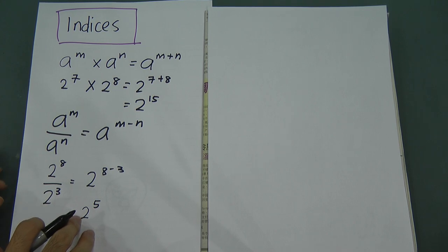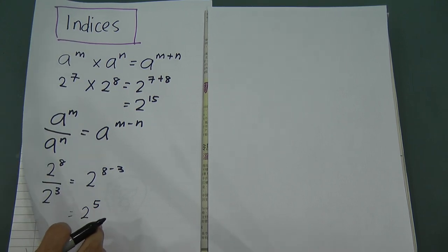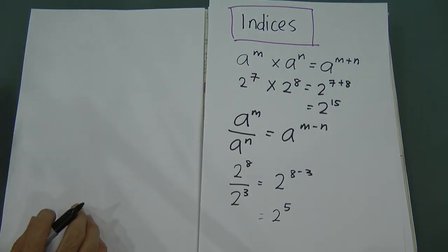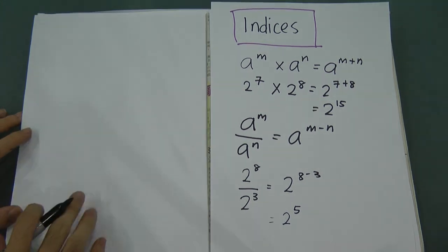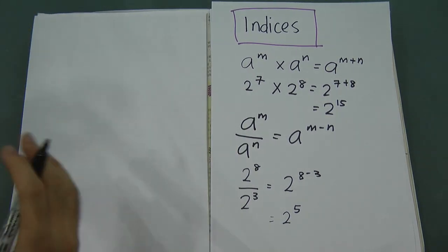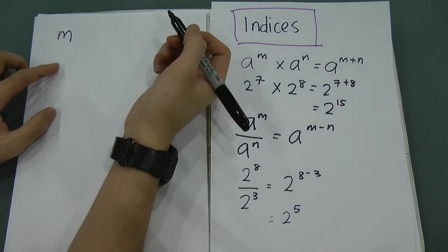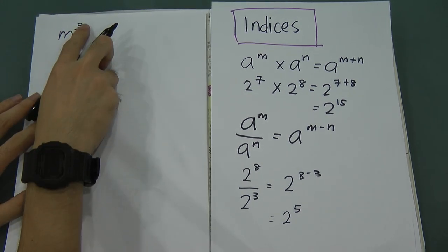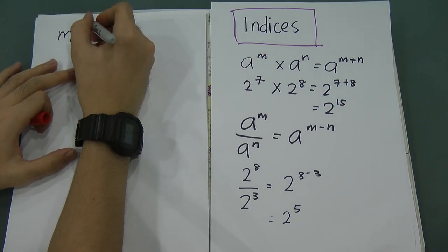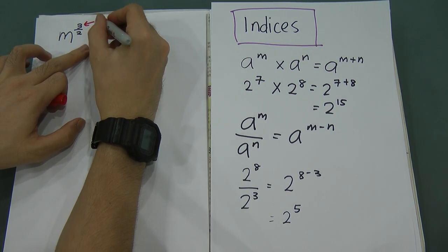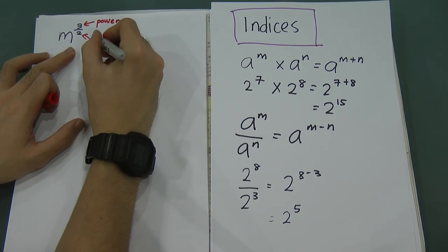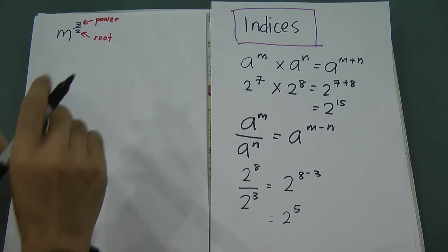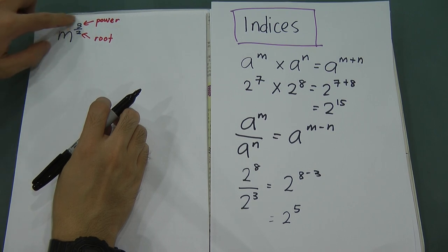Now let's look at fractional powers. For example, m to the power of 3 over 2. You have to remember: the top number, the 3, means power, and the bottom number, the 2, means root — like square root or cube root. So top is always power and bottom is always root when you see a fraction in the exponent.